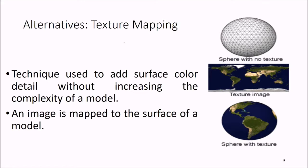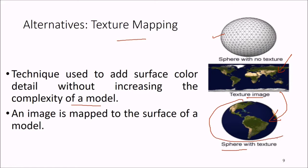Another alternative is texture mapping. This is a sphere with no texture; this is a blue marble image of our earth — a globe. When this texture image is draped or placed onto the sphere, we get a 3D perception. Techniques used to add surface color and detail without increasing the complexity of the model — an image mapped to the surface of a model — this is texture mapping.